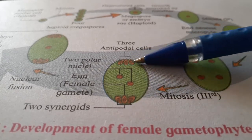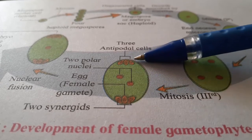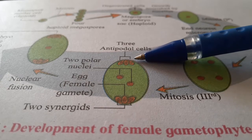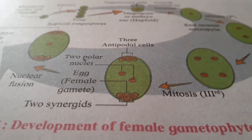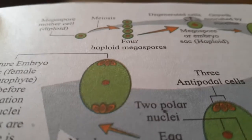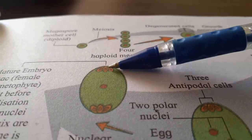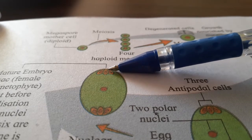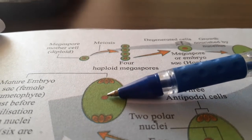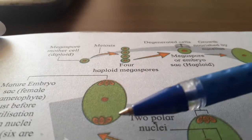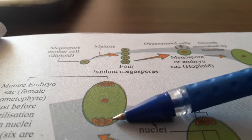The 3 cells near the chalaza are called antipodal cells. So the female gametophyte consists of 3 antipodal cells, a secondary nucleus at the centre, and 3 cells near the micropyle.